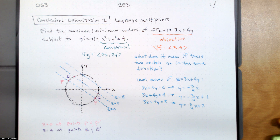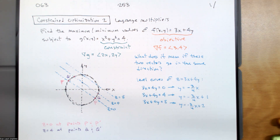We're looking for all the points that fit on x² + y² = 4. We're looking at where we take points on the circle — points on the circle that give us the highest value of the function. Now the level curves for the plane z = 3x + 4y are going to be parallel lines, so let's look at a few. We started off with z = 0 and drew the line y = -¾x.